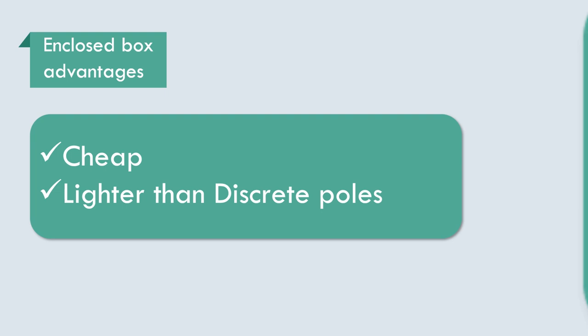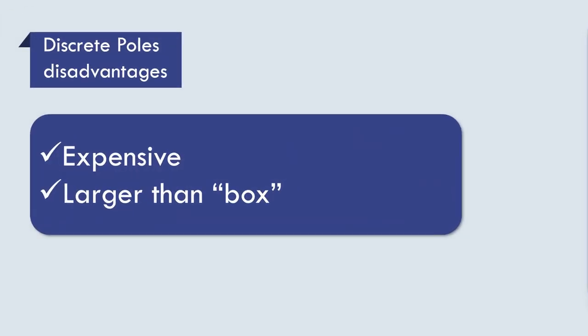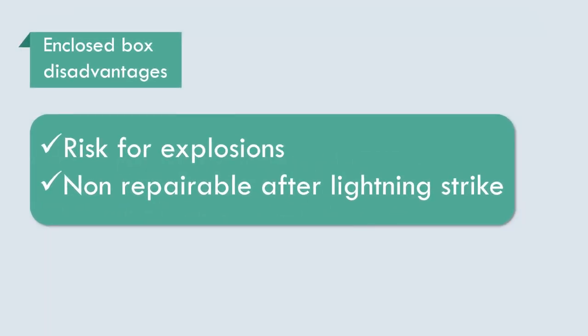Second parameter is disadvantages. Discrete poles are expensive and larger than the enclosed box. For enclosed construction, the disadvantages are risk for explosions inside the metal box, which makes it non-repairable in case of lightning or internal fault.